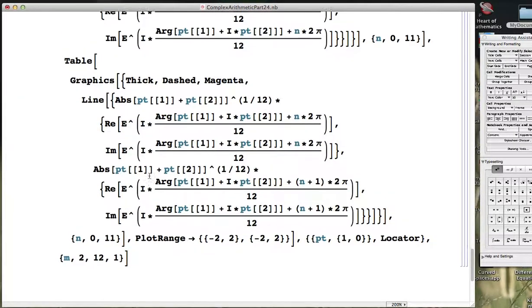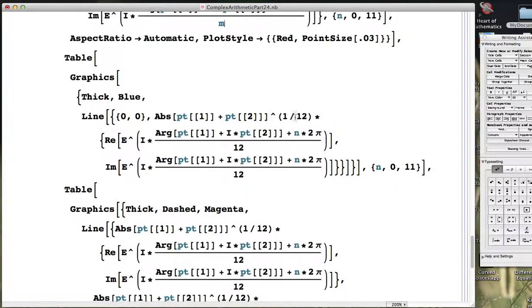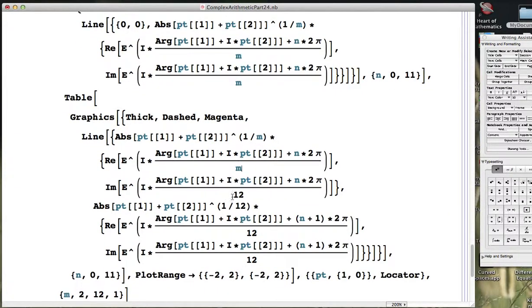That will allow us to visualize not the 12th root, but instead an arbitrary mth root of our arbitrary complex number that is chosen by setting our cursor in the field of view. So I'm changing all these 12 to m so that we can look at those mth roots.